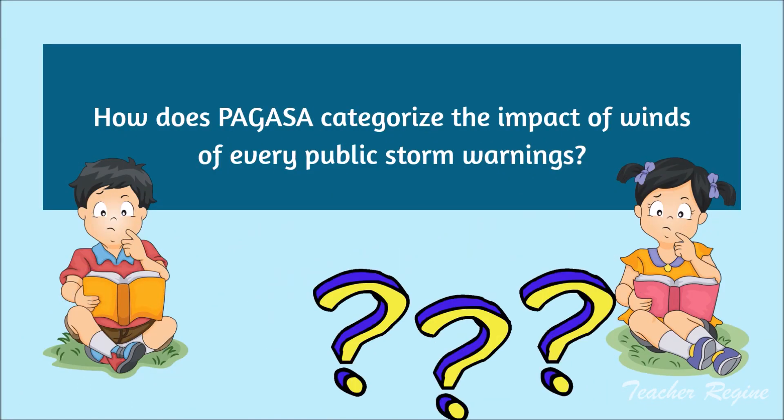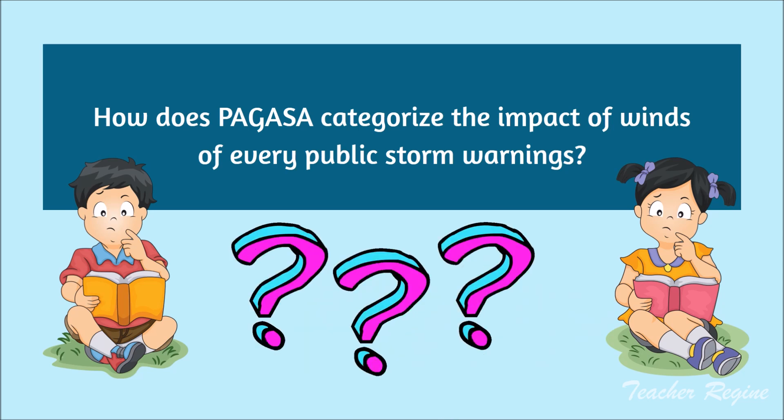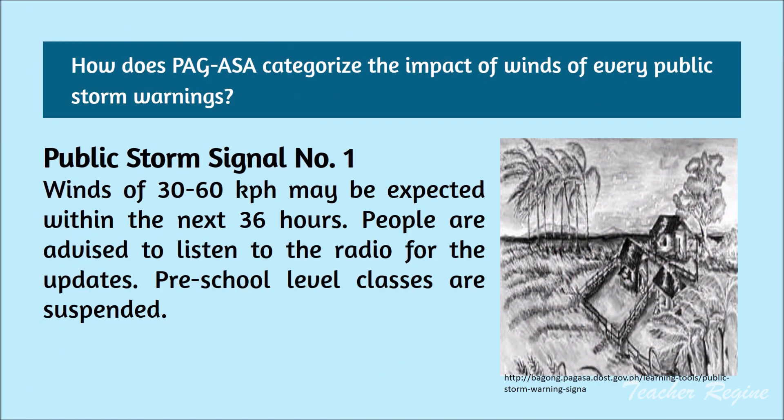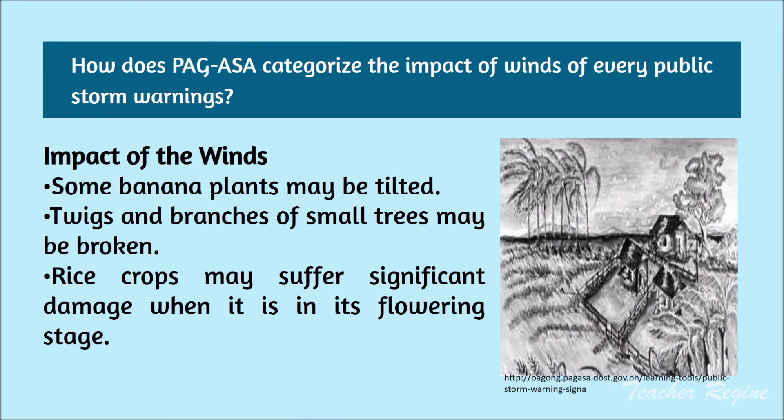How does PAGASA categorize the impact of winds of every public storm warning? Public Storm Signal Number 1: winds of 30 to 60 kilometers per hour may be expected within the next 36 hours. People are advised to listen to the radio for updates. Preschool level classes are suspended. Some banana plants may be tilted. Twigs and branches of small trees may be broken. Rice crops may suffer significant damage when in its flowering stage.